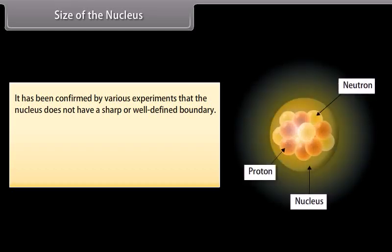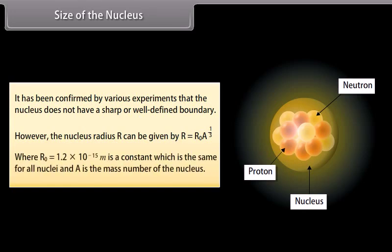Size of the nucleus. It has been confirmed by various experiments that the nucleus does not have a sharp or well defined boundary. However, the nucleus radius R can be given by R is equal to R not into cube root of A, where R not is equal to 1.2 into 10 raised to the power minus 15 M is a constant which is the same for all nuclei and A is the mass number of the nucleus.